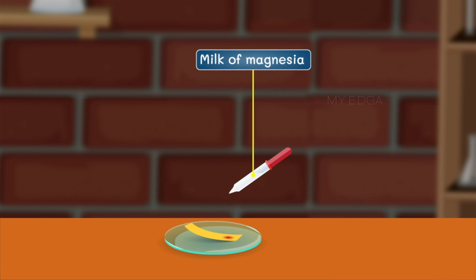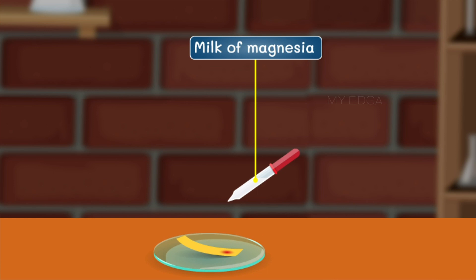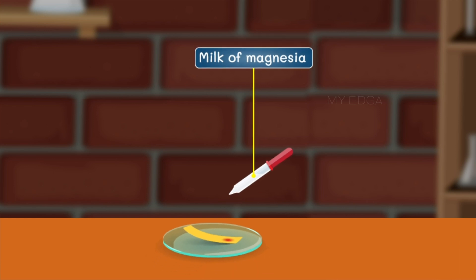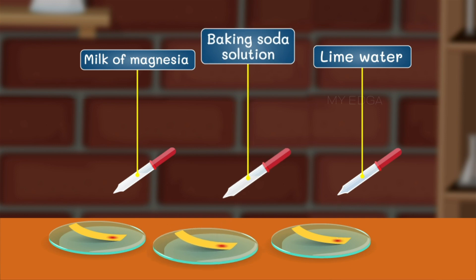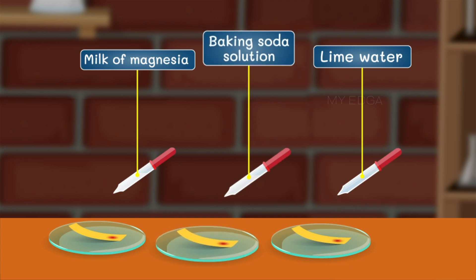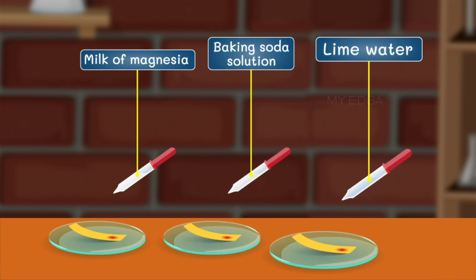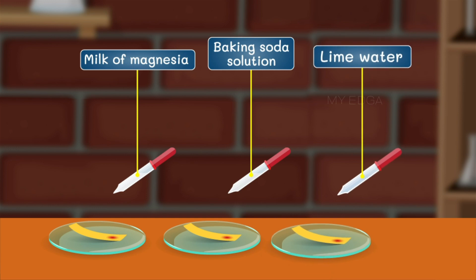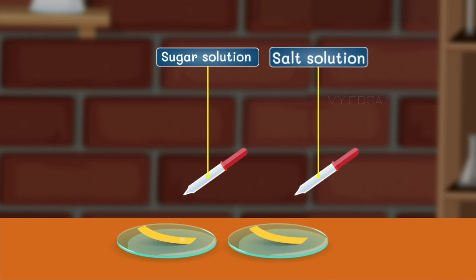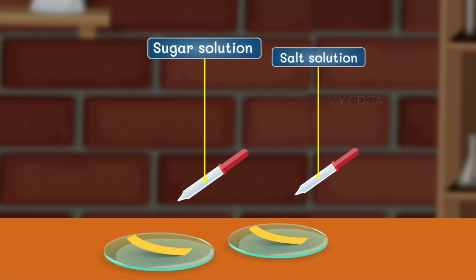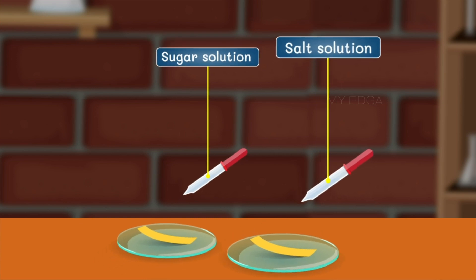Whereas the color of the strip turned red when the milk of magnesia was added, we get a similar result when we add baking soda solution and lime water to the strips - that is, the color changed into red. But there was no change on the paper strip when sugar and salt solution was added.